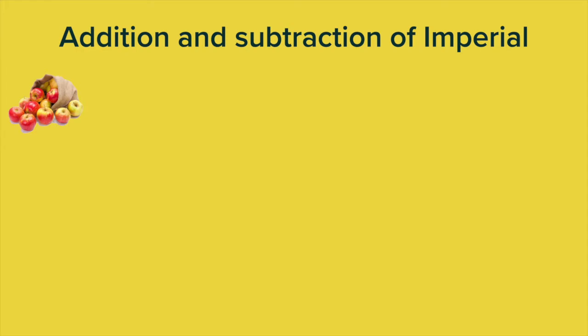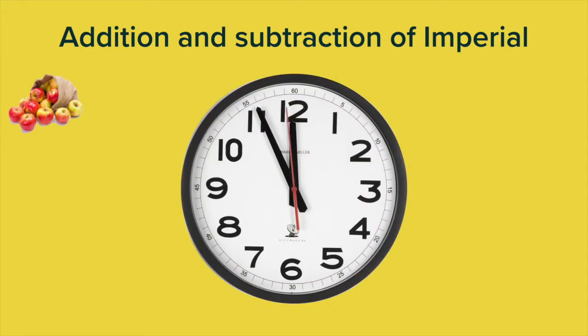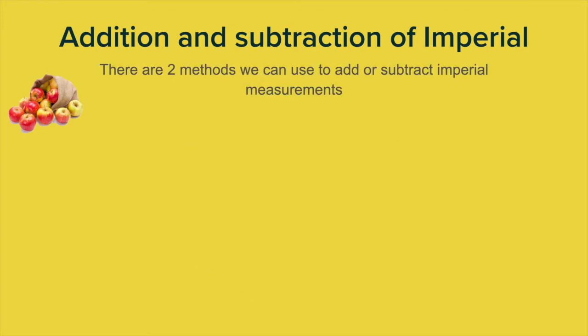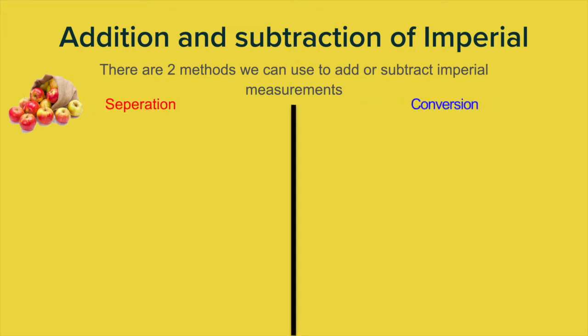Let's talk about addition and subtraction of imperial units. When we're adding, subtracting, multiplying or dividing time, we're going to treat time like imperial because time has lots of different measurements — 60 seconds, 24 hours — so we can use the same method. There are two methods we can use to add or subtract imperial measurements, and the best thing is to use them together. They are: separation and conversion. Let's start with separation.